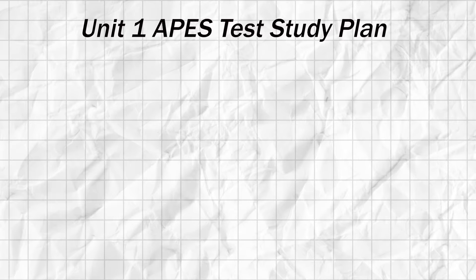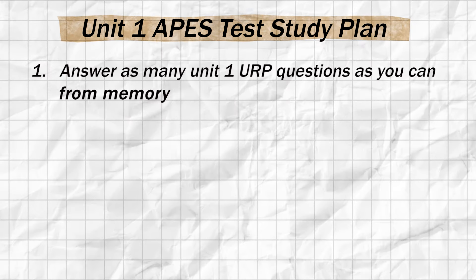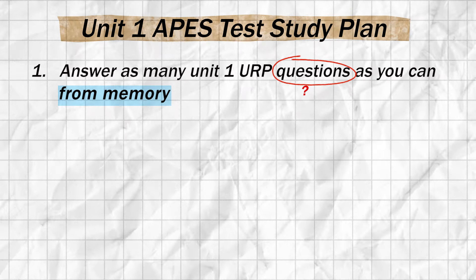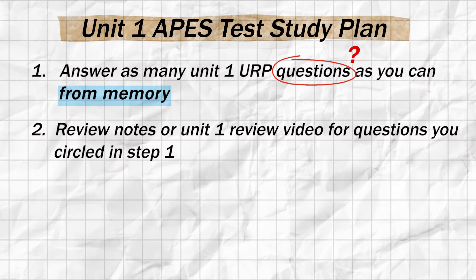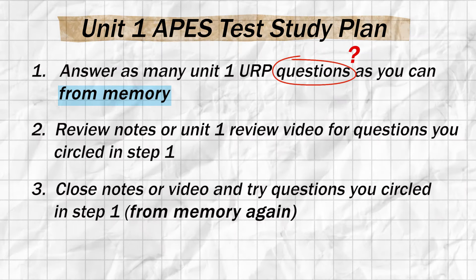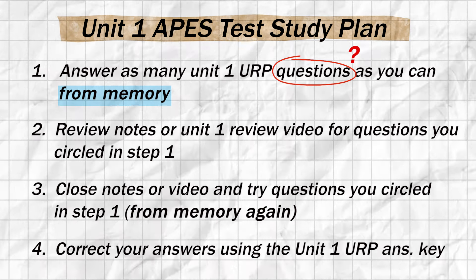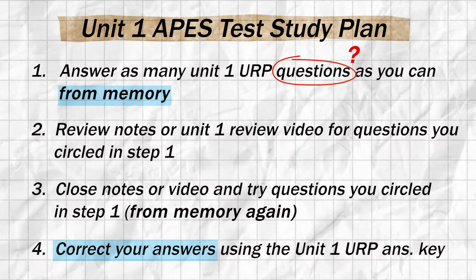So let's go through the four steps of the only APES study plan you'll ever need. Step one: answer as many of the study guide questions as you can using active recall — as a pro tip, circle or put a question mark by any questions you want to come back to. Step two: review your notes or the unit review video for any questions you skipped on your first recall attempt. Step three: close your notes or the video and try answering those skipped questions again. Step four: use the answer key to fill in any gaps and leap over that trap of familiarity.